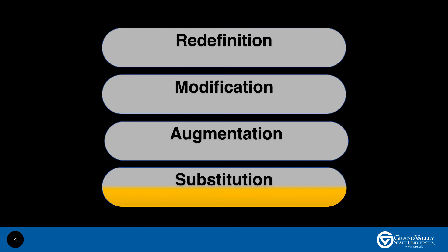At the substitution level, technology acts as a direct tool substitute with no functional change. In other words, technology is used to perform the same task as was done before the use of that technology. For example, students printing out a worksheet, finishing it, and passing it in. In this example, there is no functional change in teaching and learning, though this might be the appropriate level for some lessons.